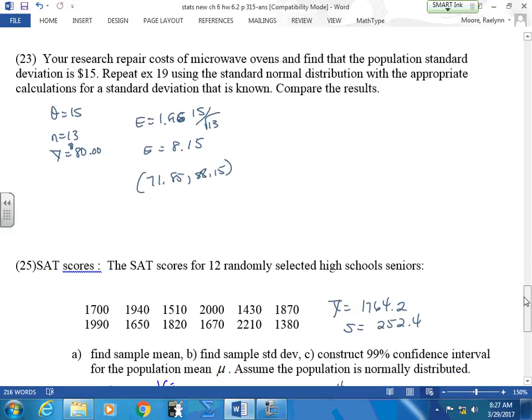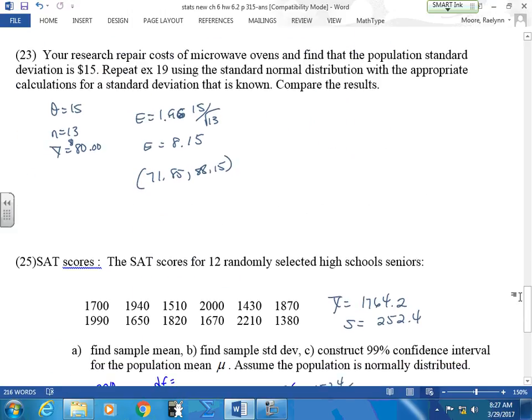And this one, you had to repeat this one using a population standard deviation. Then you're flipping back to your Z. Everybody flip back and forth? Is everybody able to do that? If they give you the population, you go back to the Z? Okay.